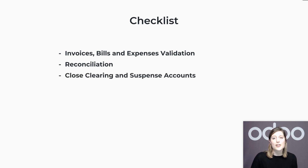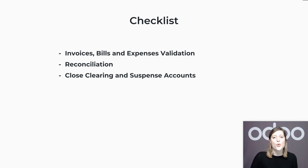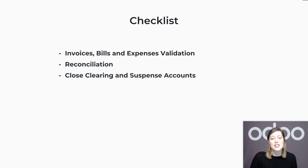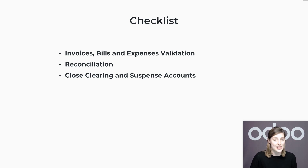It's also time to close the clearing and suspense accounts and leave their balances at zero. These are both temporary accounts. A clearing account allows us to record a transaction and hold it for later posting once we are sure which account it goes to. And a suspense account is used when there is a problem or uncertainty and we still want to record an amount — for example, when a customer sends us a certain amount of money but we still have to investigate to be sure we apply it to the correct invoice or invoices.